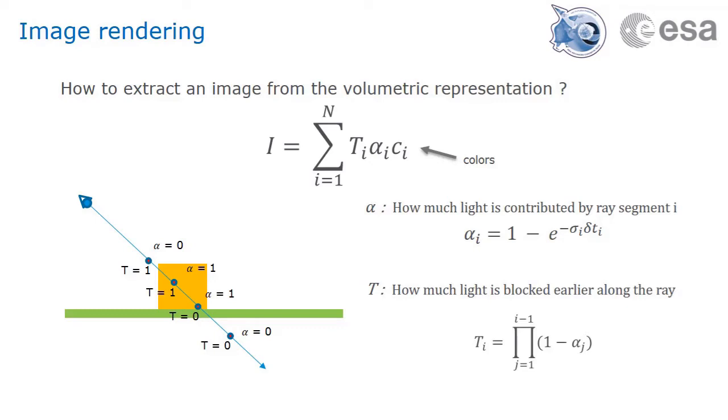It represents the amount of light that is blocked earlier along the ray. By multiplying these two quantities together, we get high values only if a point is contributing light and is not occluded by something else.